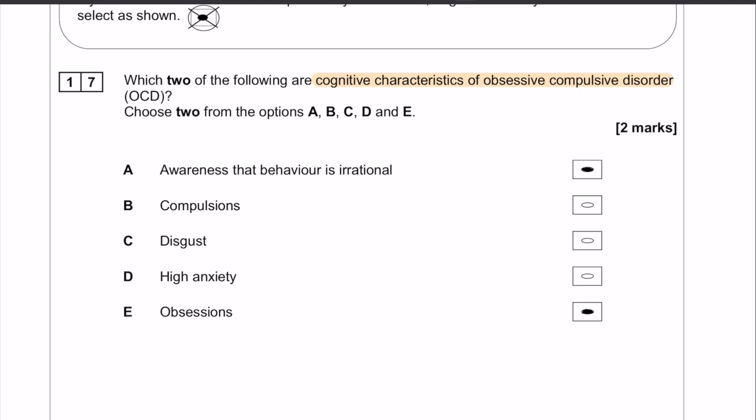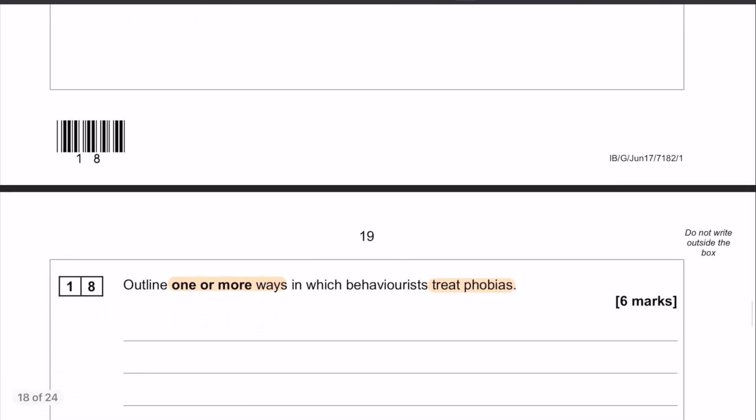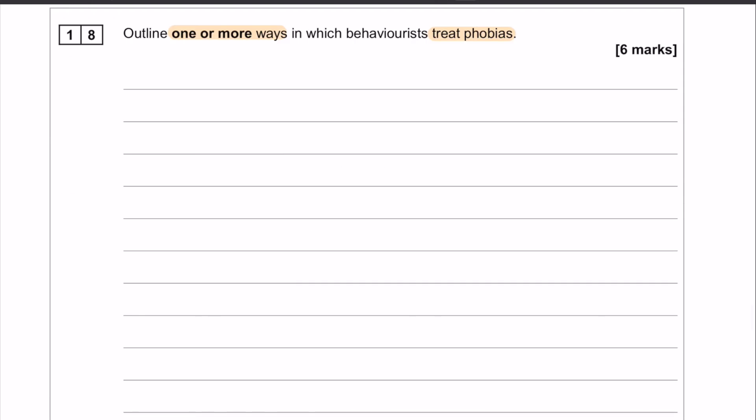Okay, moving swiftly on to number 18. So this is a six marker, this is a long answer question, and it is outline one or more ways in which behaviorists treat phobias. Now this is not a trick question, you can get the full six marks if you only outline one way in which behaviorists treat phobias, and it's not a problem to do that.